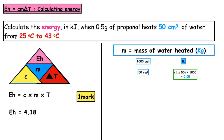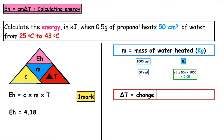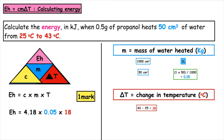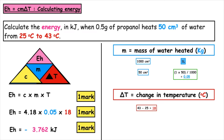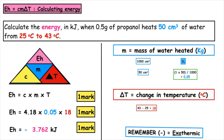This time we have two temperature values, which means we need to calculate the change in temperature. We take the small number away from the big number: 43 take away 25 gives us a change in temperature of 18 degrees Celsius. That gives us our second mark. When we put that into the calculator, we get an energy released of 3.762 kilojoules. Remember, you won't get penalised if you don't include the negative at National 5.